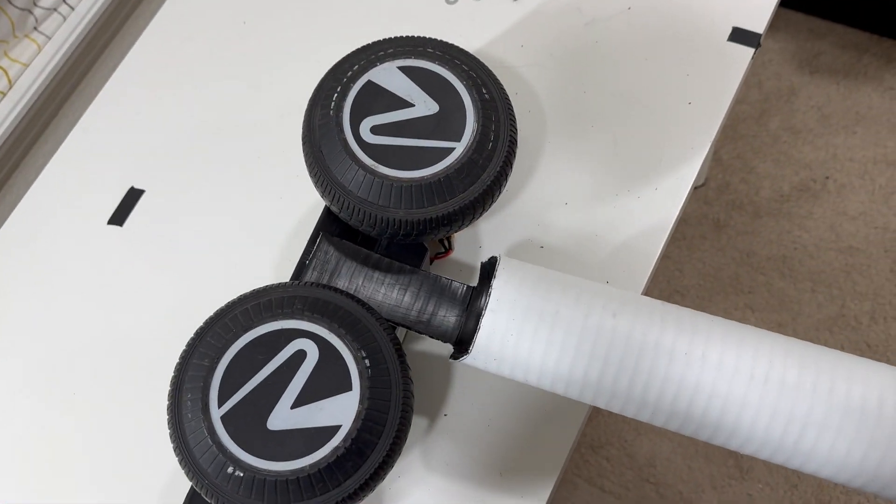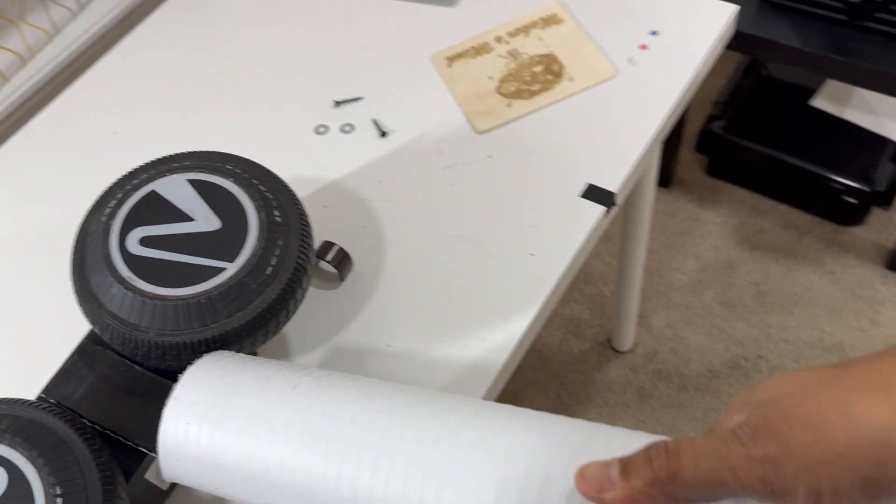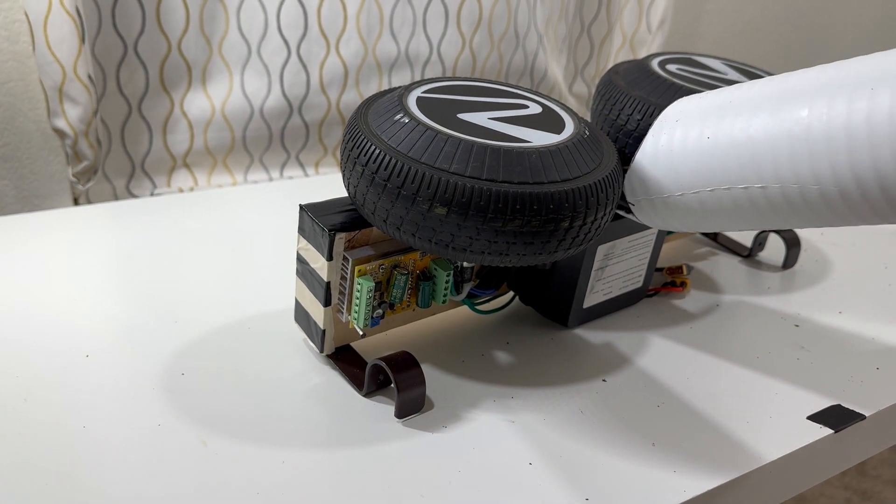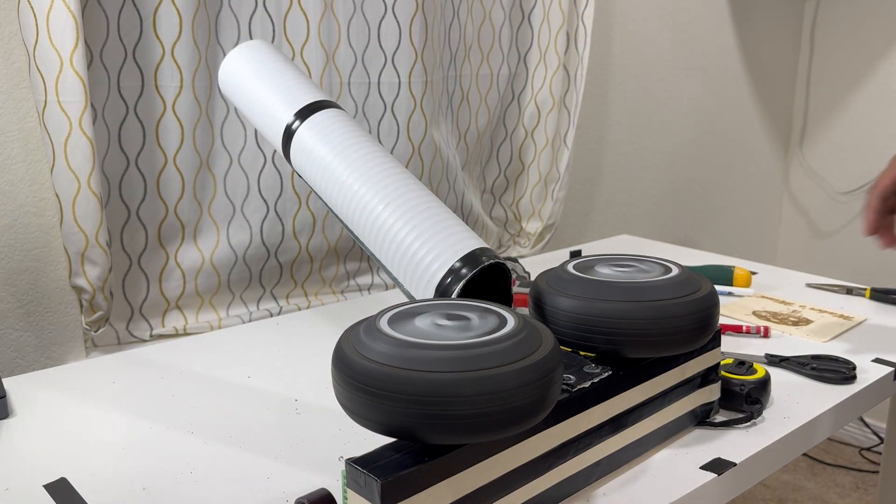We'll attach one side to the wooden bar at an angle roughly 30 to 45 degrees, and the other end will keep open to insert the cricket balls. We need to test how it is working before we work on the automated feeding system.